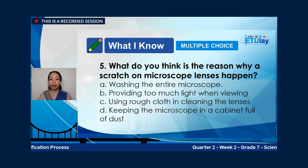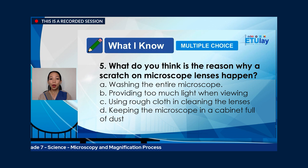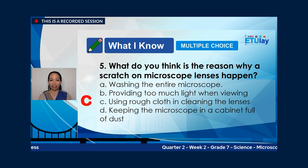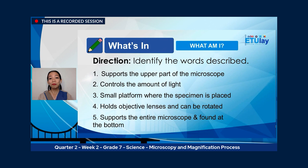Last item for our pre-test, number five: what do you think is the reason why scratches on microscope lenses happen? A, washing the entire microscope; B, providing too much light when viewing; C, using rough cloth in cleaning the lenses; or D, keeping the microscope in a cabinet full of dust? The correct answer is letter C, using rough cloth in cleaning the lenses.